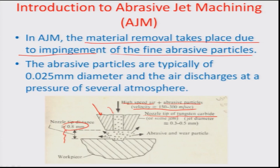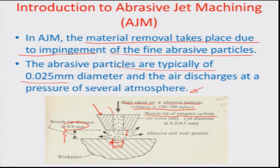At that distance, the jet has not lost enough power due to drag and atmospheric pressure. It produces a zone where crack formulation occurs because of the continuity of abrasive particles. If the nozzle is moved toward the workpiece, the zone expands and different depths of cut can be formed — up to the extent that the nozzle does not start touching the surface. The abrasive particles are typically about 0.025 mm in diameter and the air discharges at a pressure of several atmospheres.